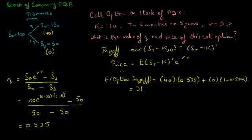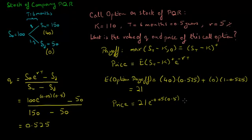We know that the price of the option is just the expected payoff discounted at the risk-free rate. Therefore, the price of the option equals 21 discounted at the rate of 5% over 6 months, or 0.5 years. And this equals 20.5. So the price of this call option is 20.5.